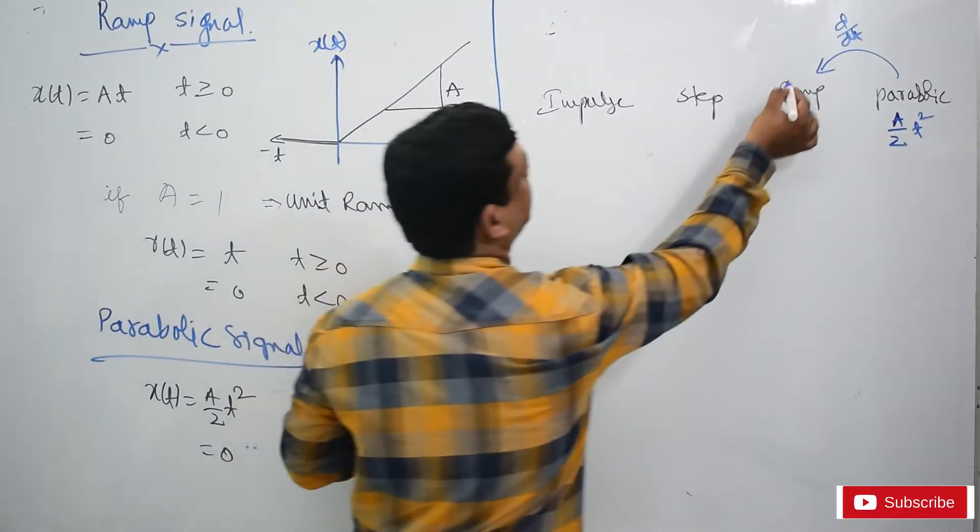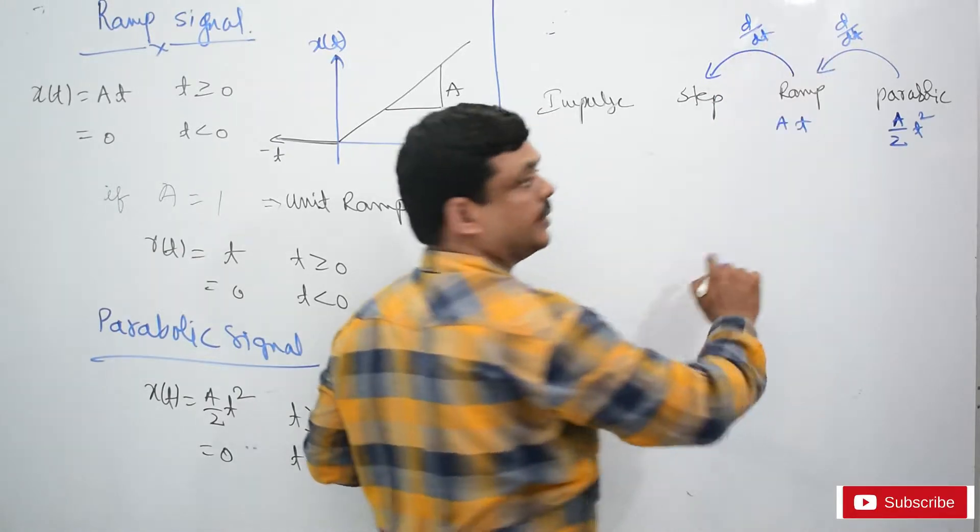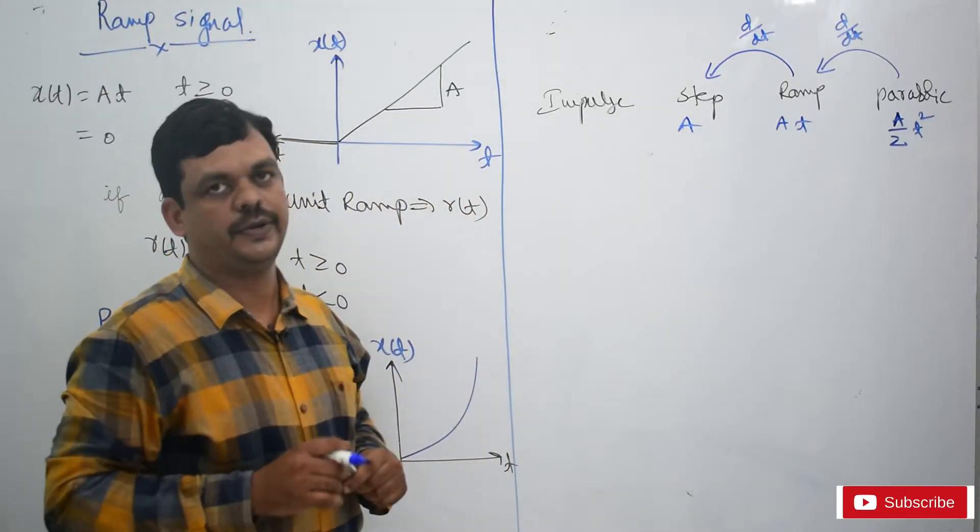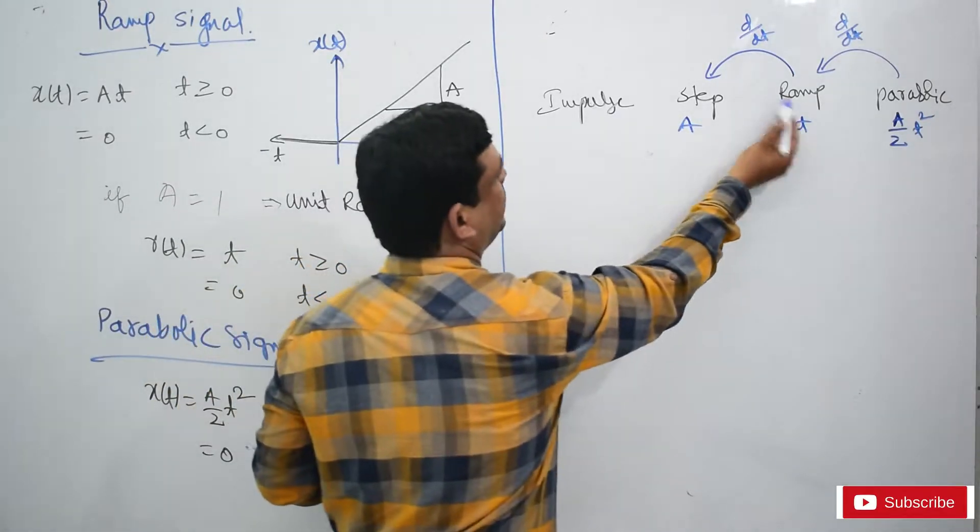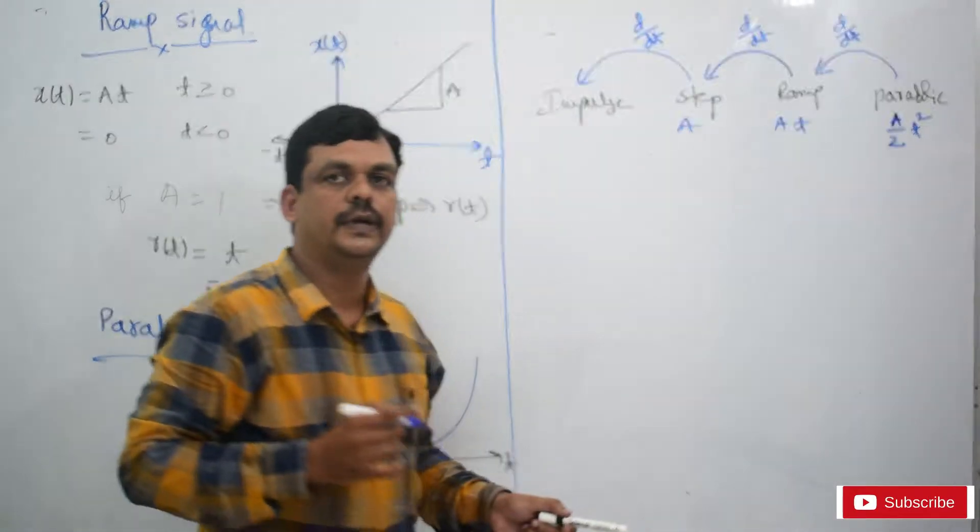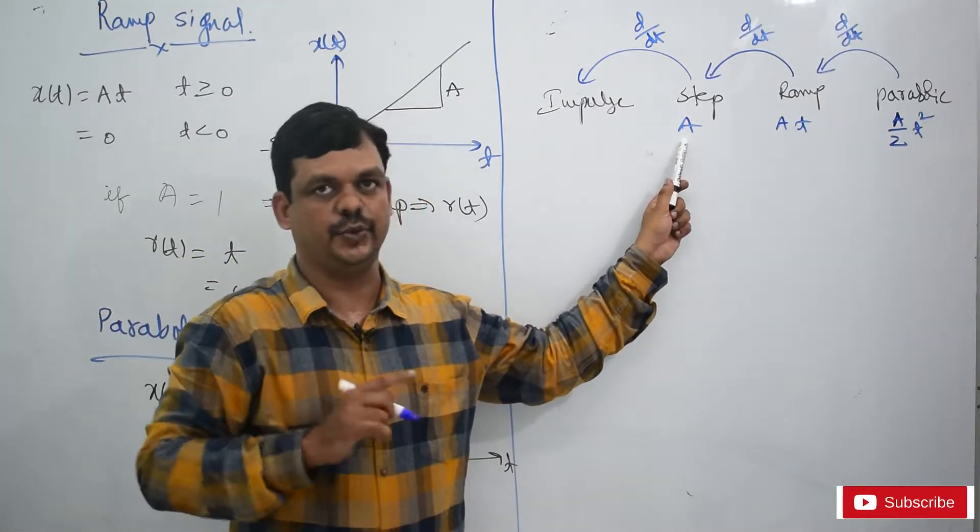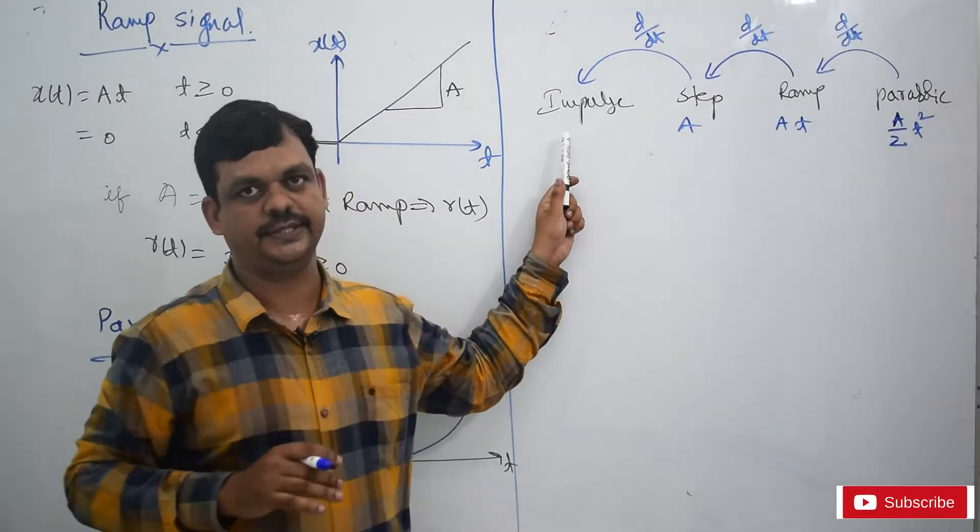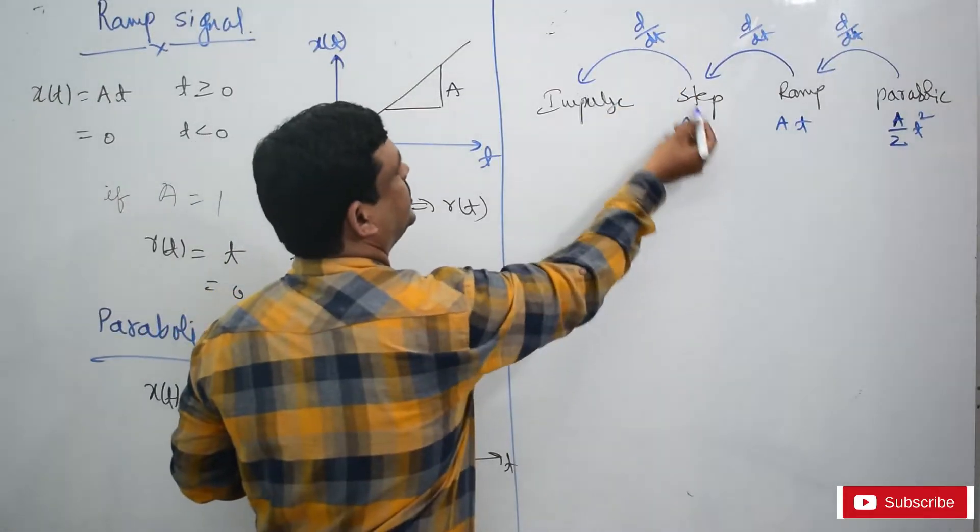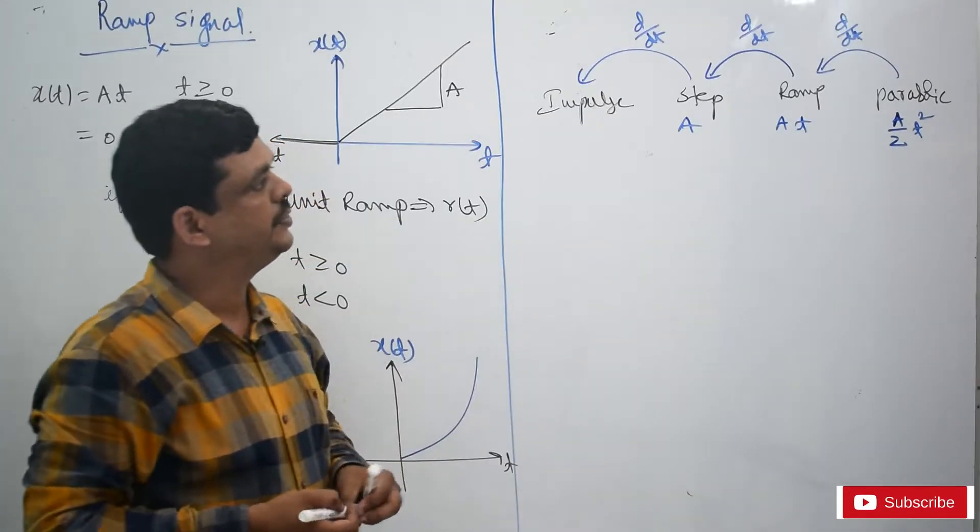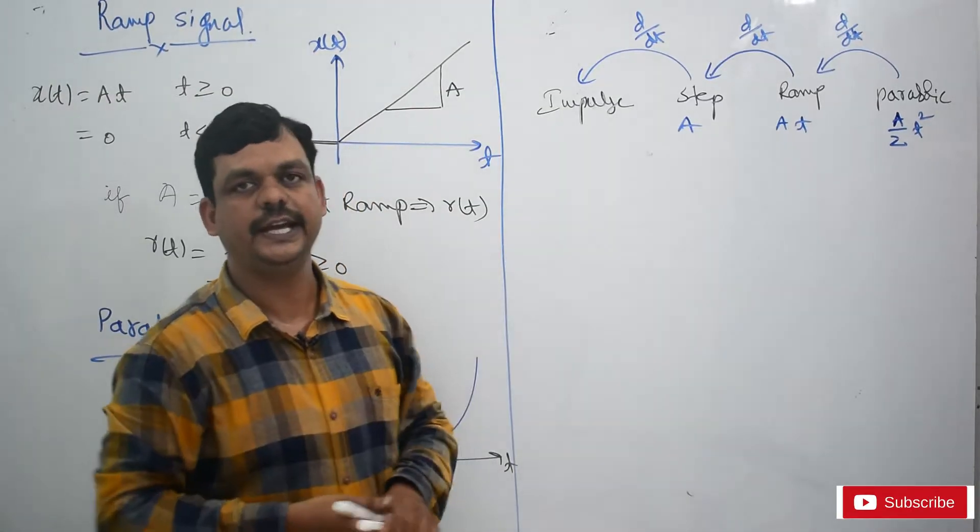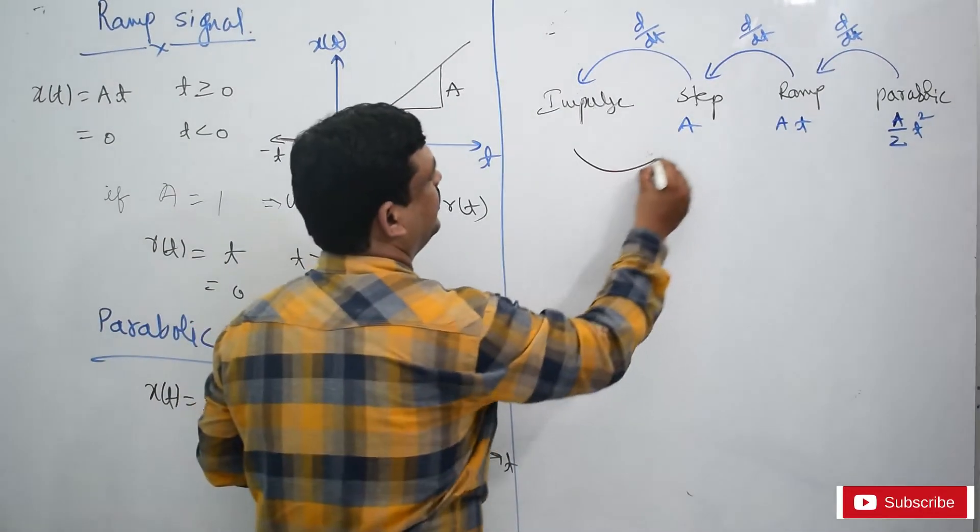Similarly, differentiation of ramp, a by 2 t is a. A explains the constant amplitude, which is your step. So differentiation of ramp becomes step, and differentiation of step is exactly the impulse. According to integration, impulse function is step.